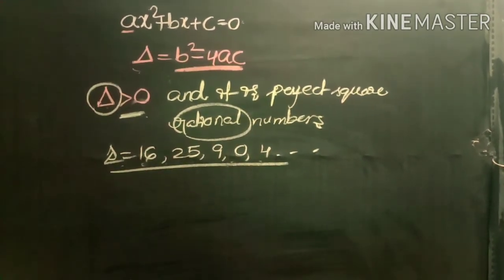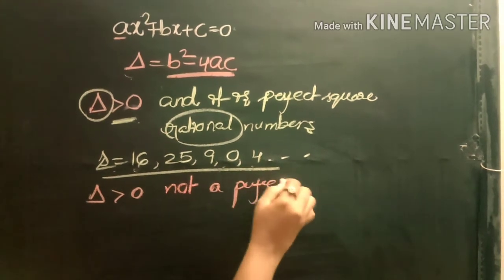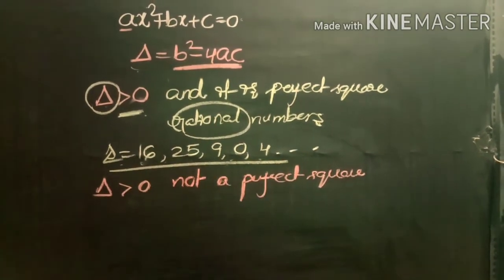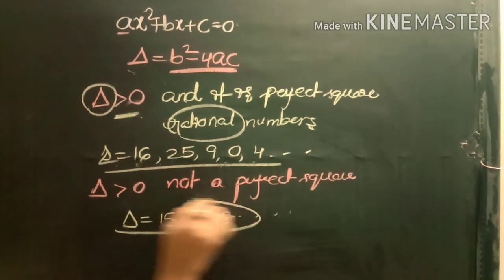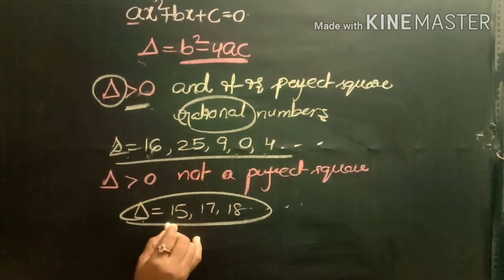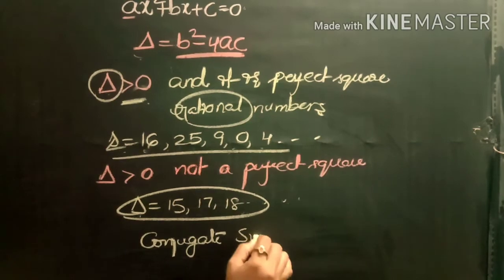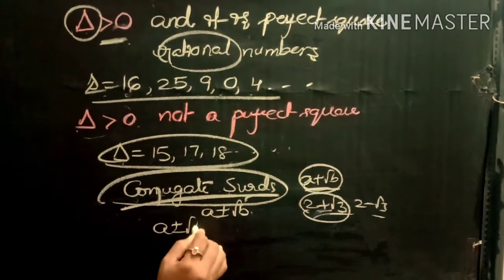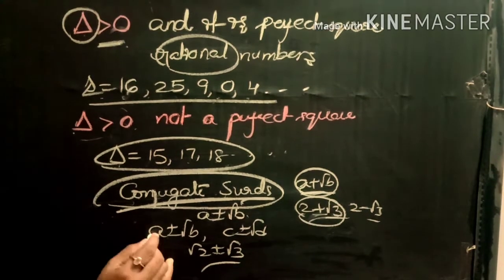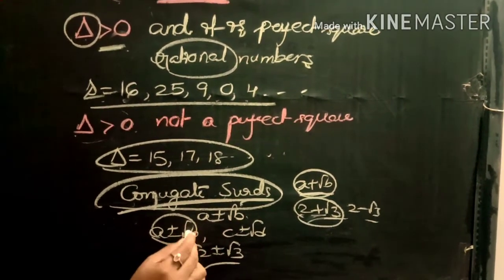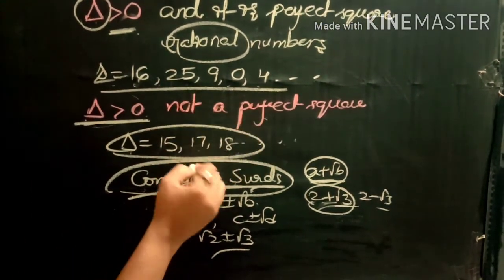Case 2: if delta > 0 and it is not a perfect square — for example delta equals 15, 17, or 18 — then the roots are conjugate sets. Conjugate sets means numbers in the form a ± √b, like √2 ± √3. If a + √b is a root, then a − √b is its conjugate.